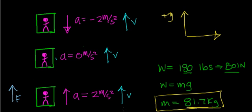In the last problem, we considered how much you weigh as an external force accelerates you. We saw that as an elevator starts to accelerate upward, there is an apparent increase in your weight due to the additional force acting upon you, in this case by the elevator. In this session, let's take a look at what happens when the elevator reaches constant velocity — that is, acceleration is zero — and what happens when the elevator starts to slow down and what happens to your apparent weight.